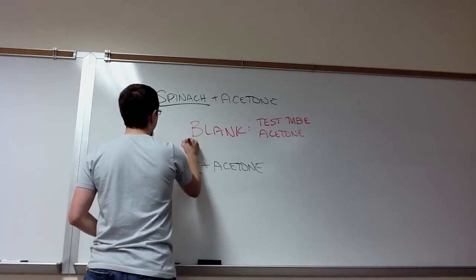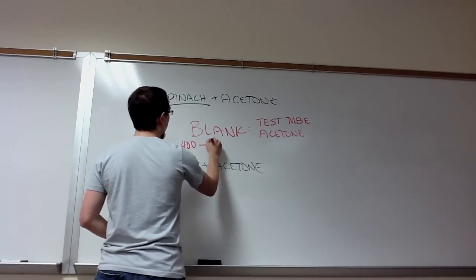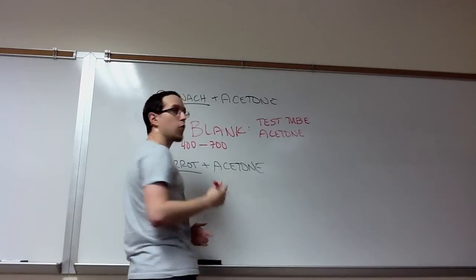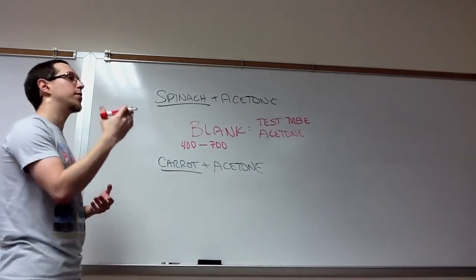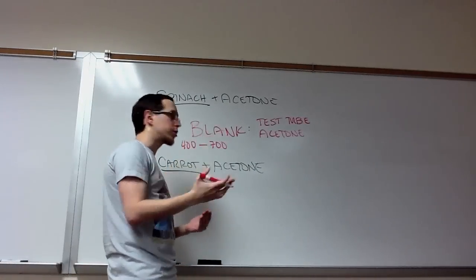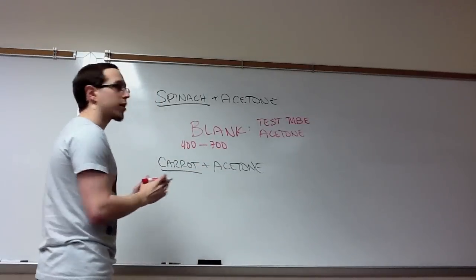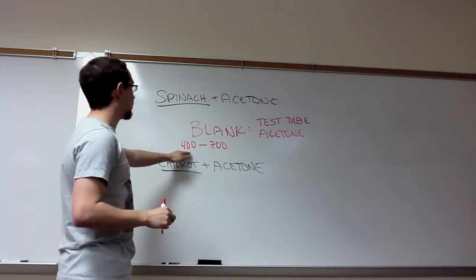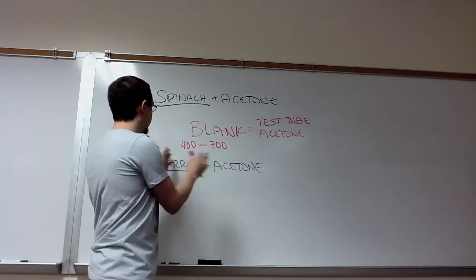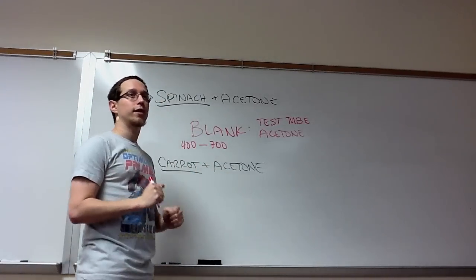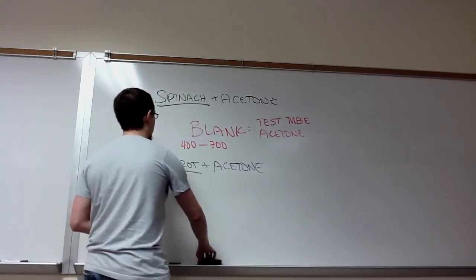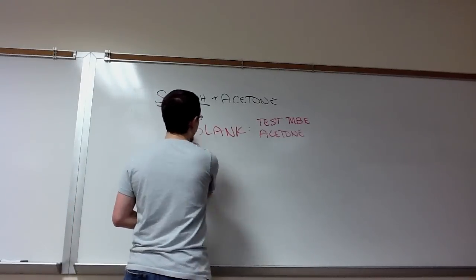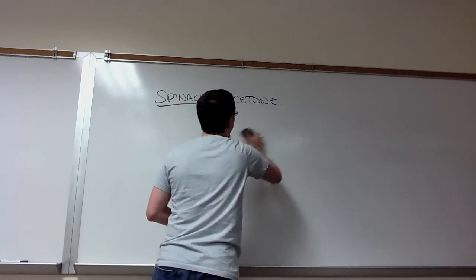What you did was you went from 400 in 25 nanometer increments all the way up to 700: 400, 425, 450, 475, 500, so on and so forth through all of these. You constructed a spectrum in a graph of these different wavelengths, this range of wavelengths along with the percent transmittance and the absorbance that you observed at each of those wavelengths for both spinach and carrot.